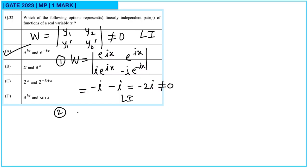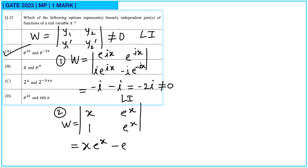For the second pair: x and e^x. The derivative of x is 1 and of e^x is e^x. The Wronskian is x·e^x − e^x = (x−1)·e^x. The exponential function is non-zero, so in general this will not equal 0. So they are linearly independent, meaning option B is also correct.